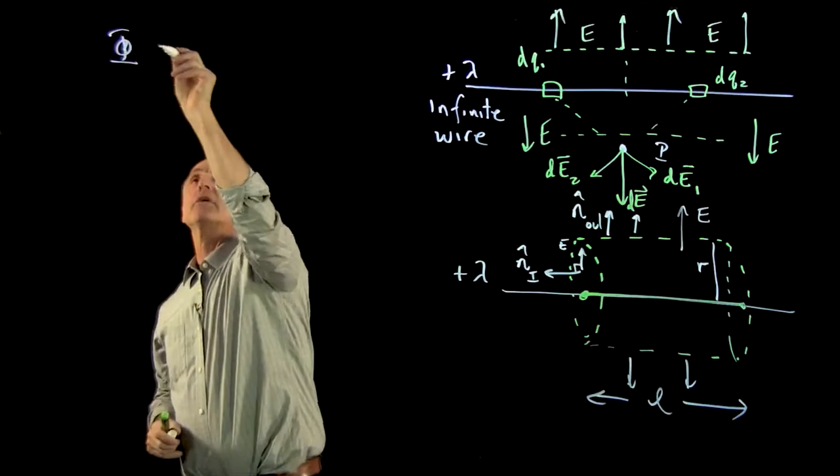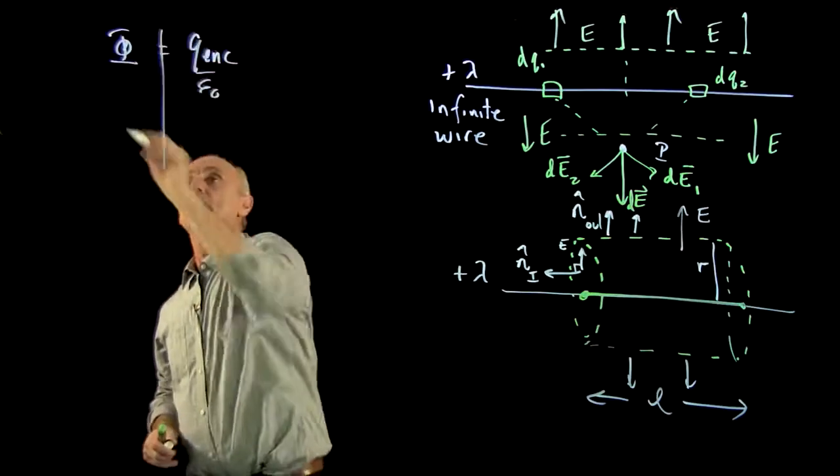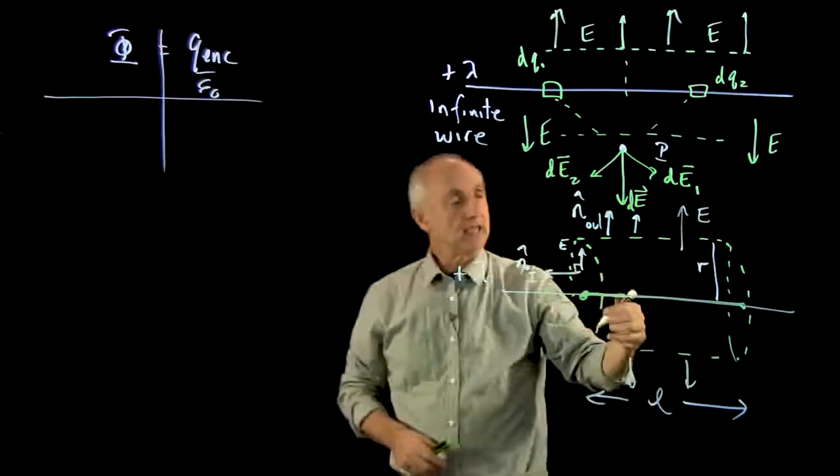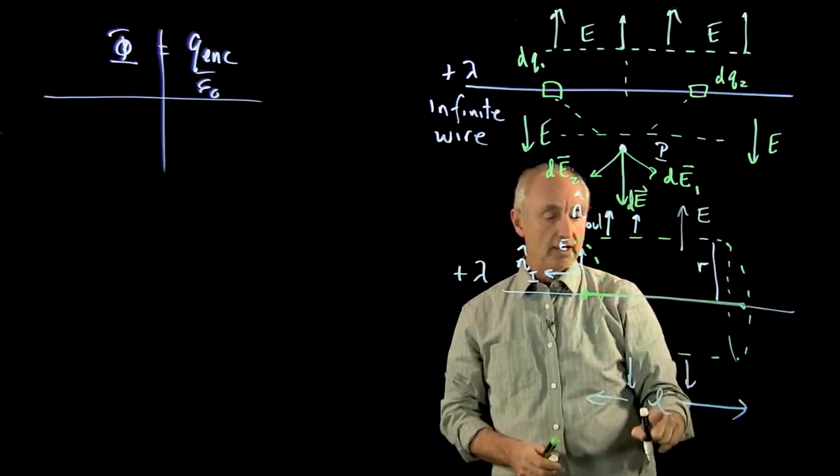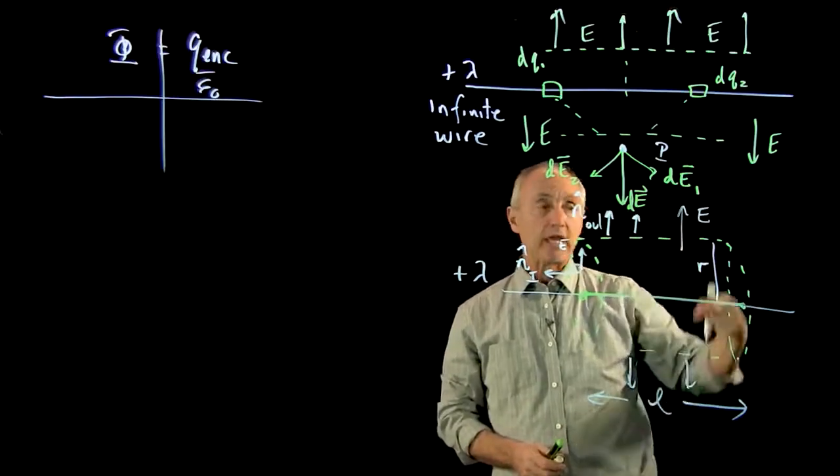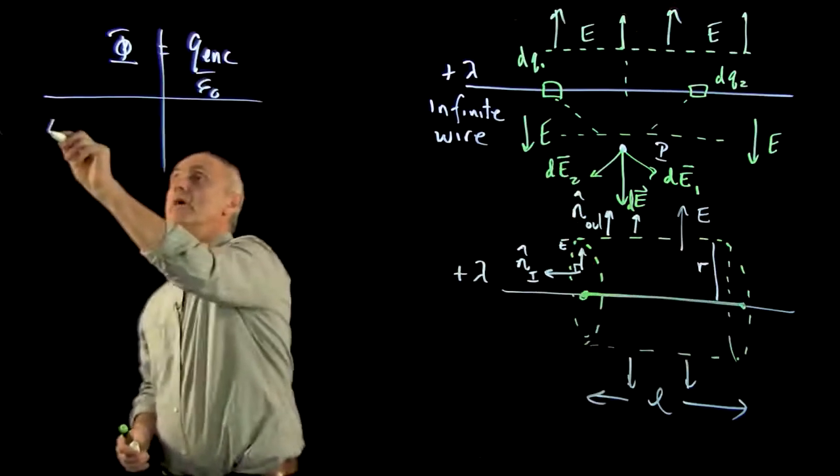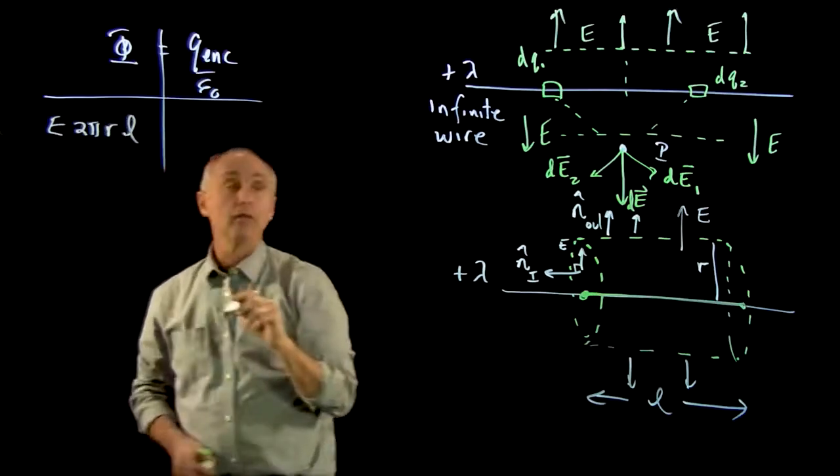We have the flux is equal to the charge enclosed over epsilon 0. And now, what is the flux? It's just the E times the area of the body of the cylinder. The cylinder has radius R and length L. So the area of the body is circumference times length. So that's where our Gaussian parameters come in, R and L.